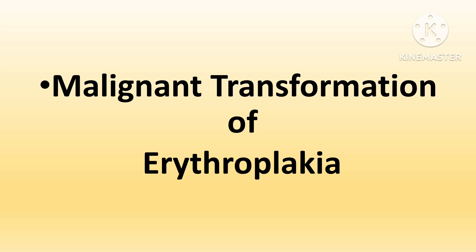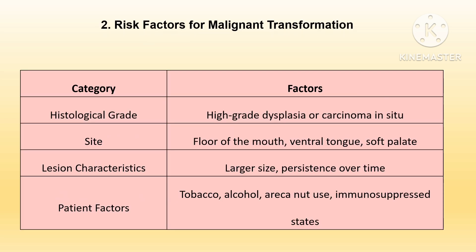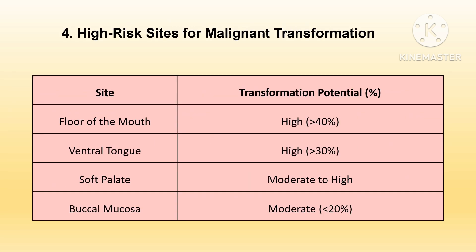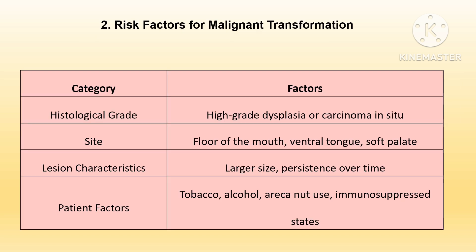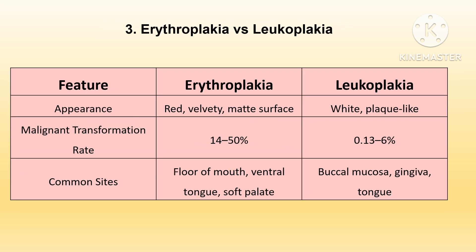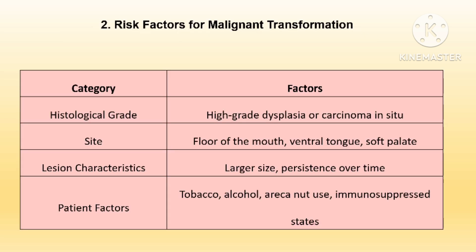Regarding malignant transformation, erythroplakia is one of the highest-risk oral precancerous lesions. Its transformation rate to invasive carcinoma ranges from 14% to 50%, significantly surpassing conditions like leukoplakia. Factors influencing malignant transformation include histological grading — with high-grade dysplasia and carcinoma in situ being most likely to progress — and lesion site, especially high-risk areas like the floor of the mouth, ventral tongue, or soft palate, due to their rich vascular supply. Larger lesions and persistence over time also elevate the risk. Tobacco use, alcohol consumption, and immunocompromised status synergistically contribute to transformation.